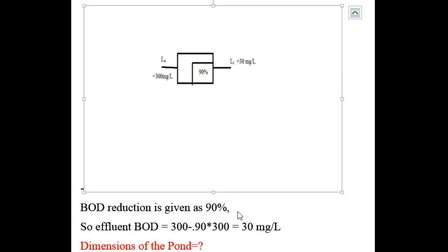Since BOD reduction is 90%, we find the effluent BOD. The inlet BOD is 300 mg per liter, and 90% is being reduced. So effluent BOD = 300 minus 90% of 300 = 30 mg per liter.